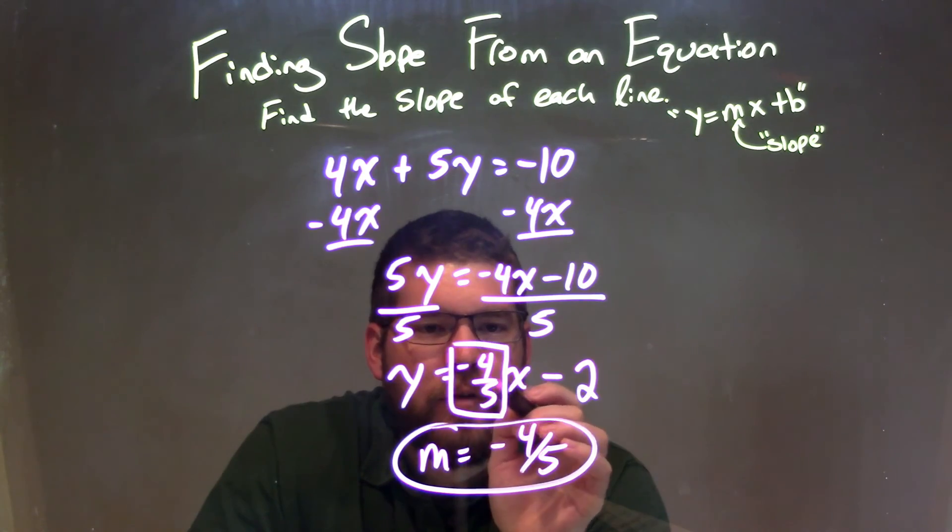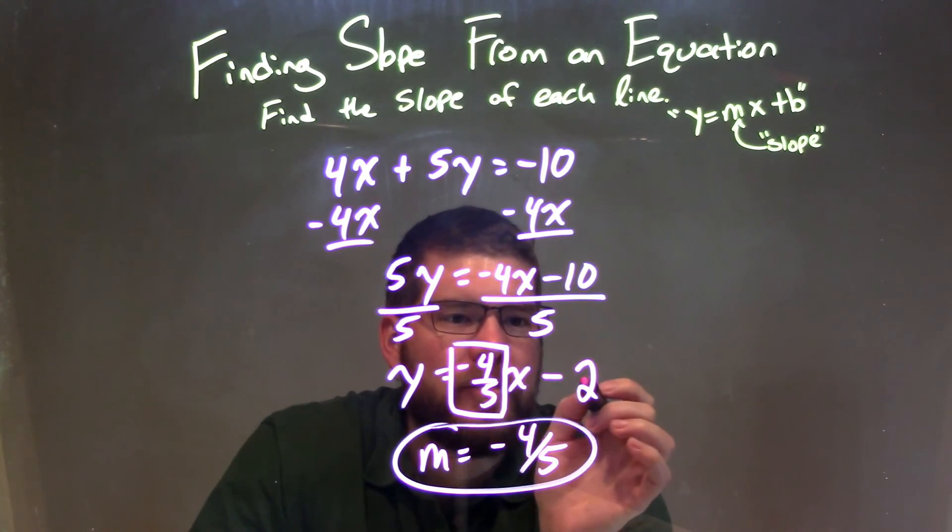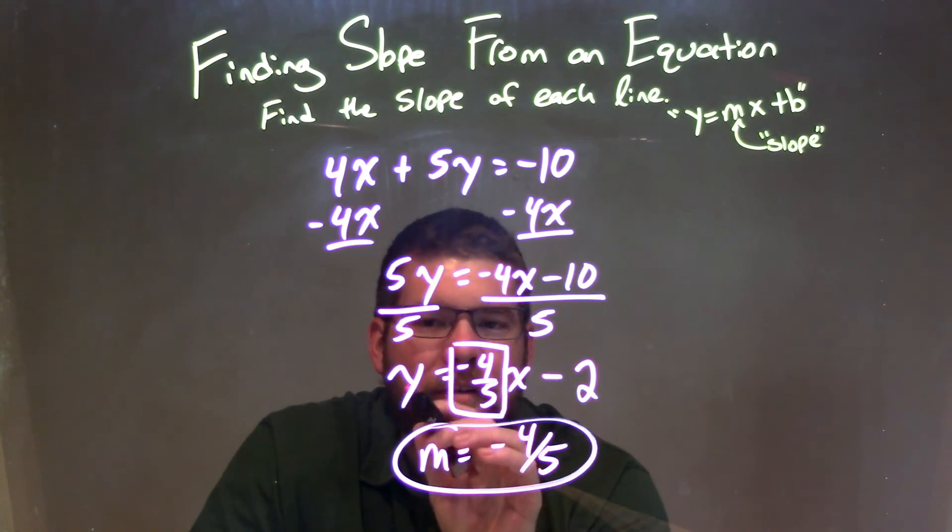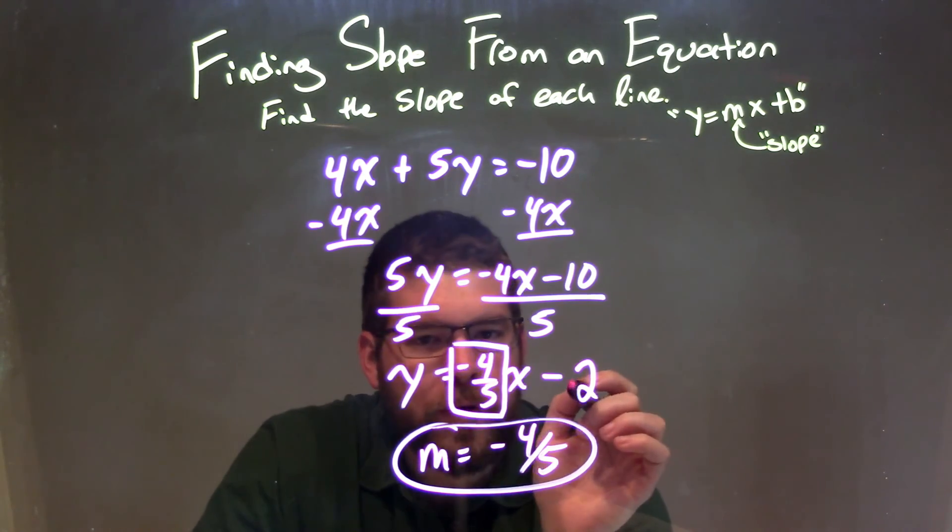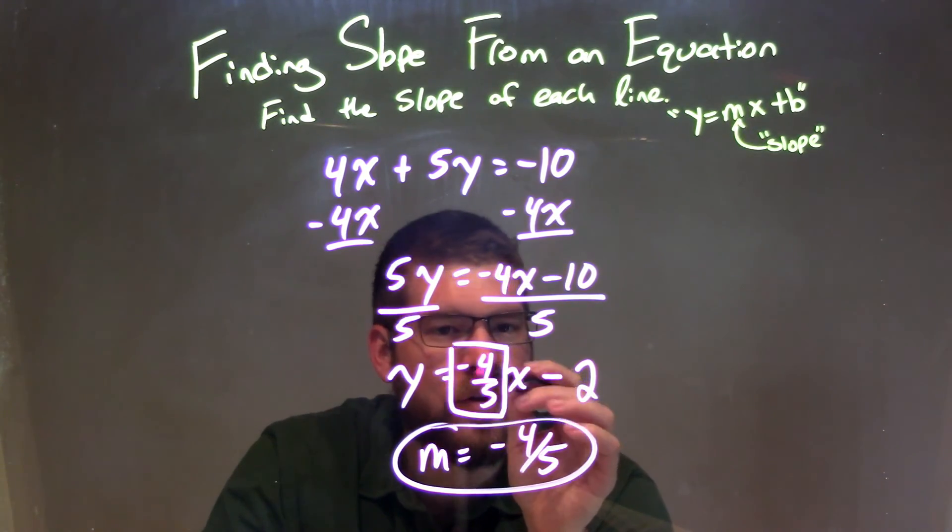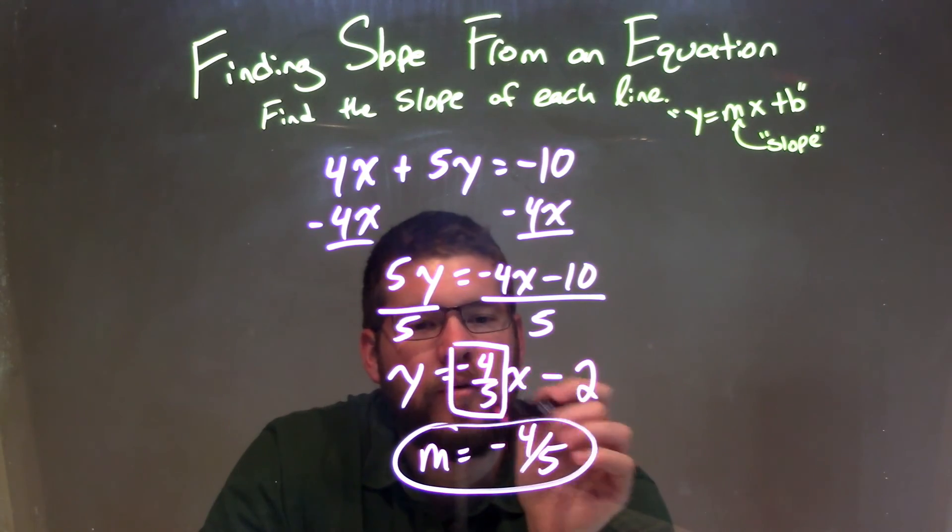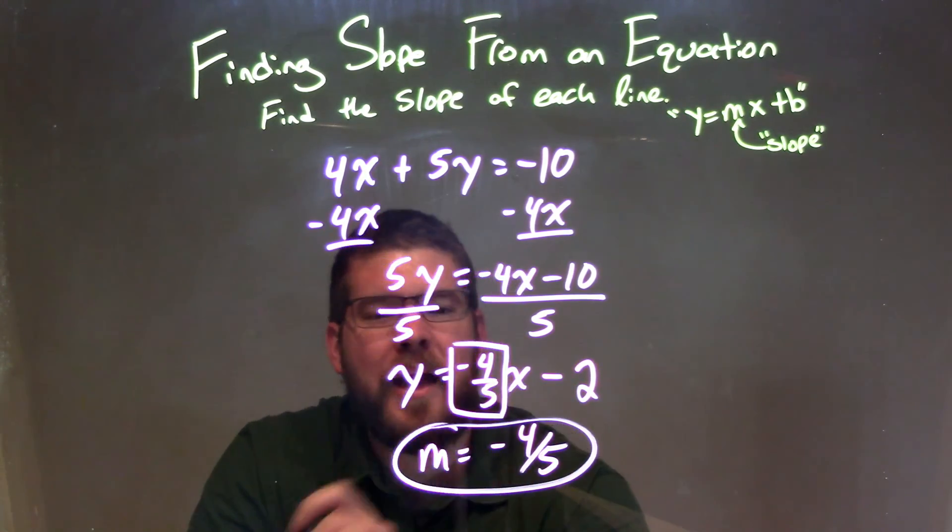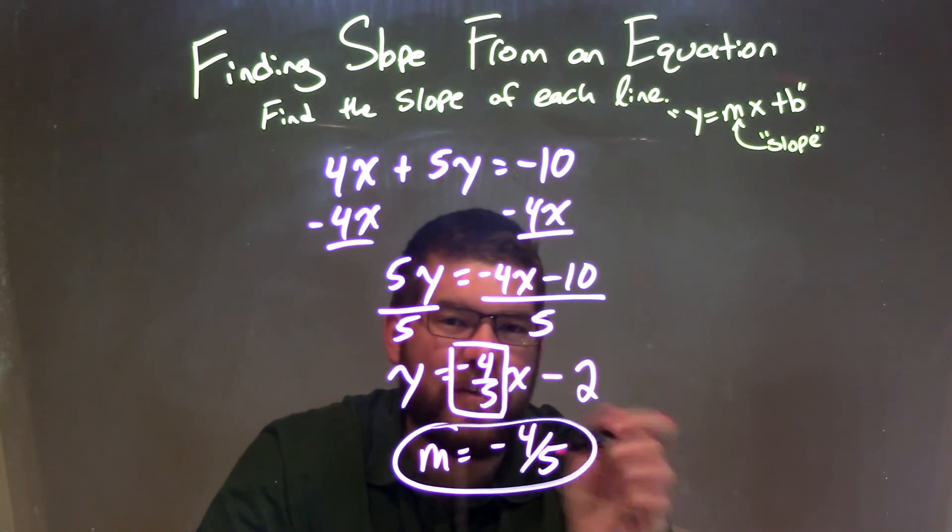Giving me negative 4 fifths x and minus 2. Now I have it in y equals mx plus b form, so I've got to isolate the slope, which is the coefficient in front of x. And so I wrote that down as my final answer: m equals negative 4 fifths.